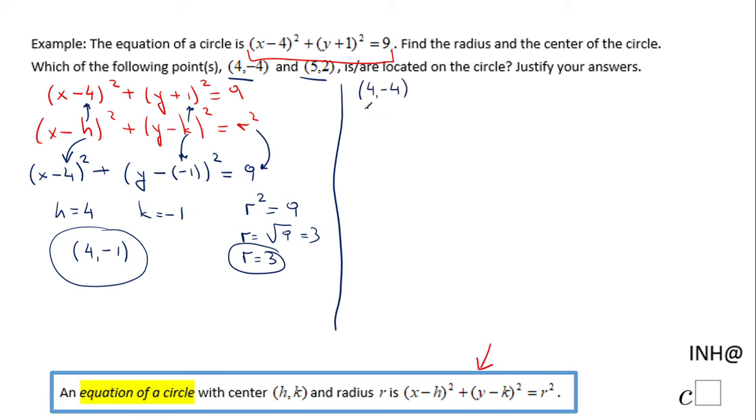So this is x and this is y, and I'm going to plug it in this equation. So we're going to have 4 minus 4 square plus negative 4 plus 1 square equals 9. 4 minus 4 is 0. 0 square plus negative 3 square, is that equals 9? I should put question mark here because we're checking a statement.